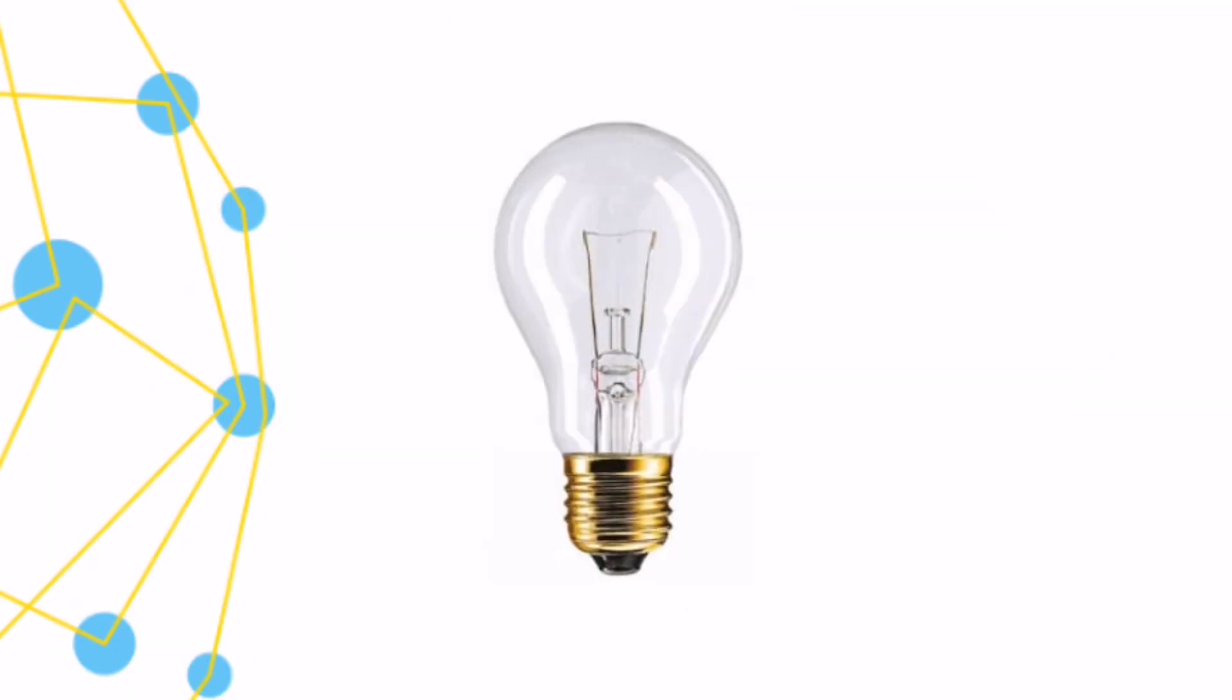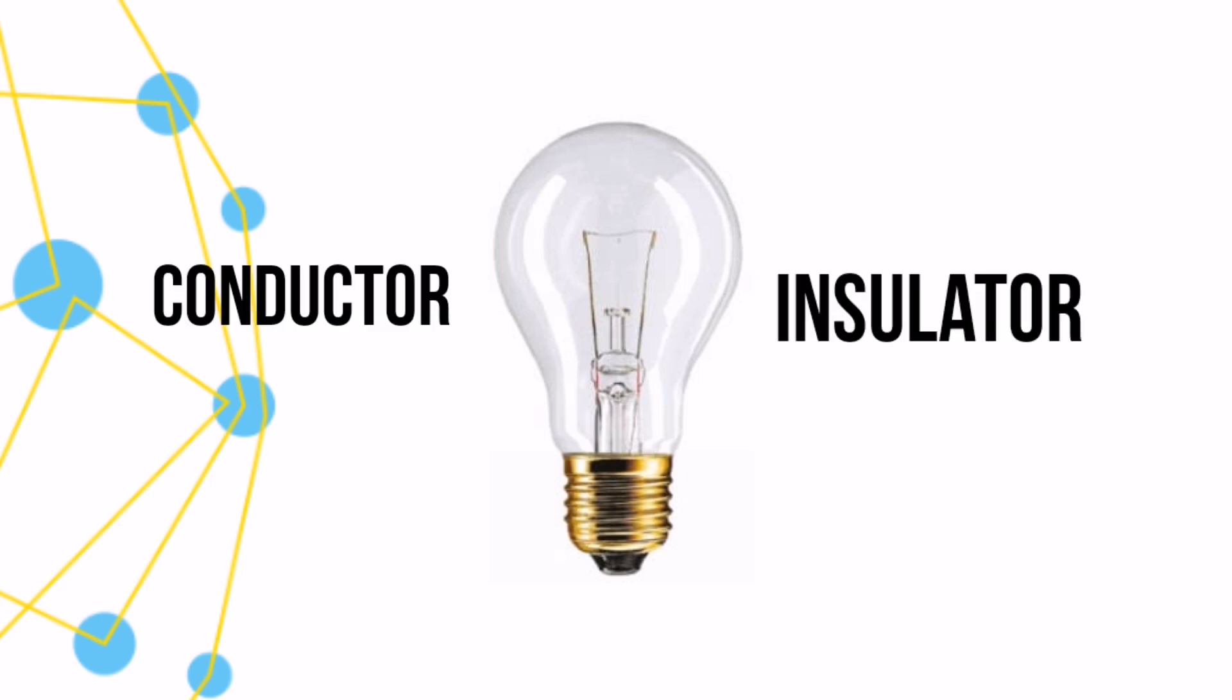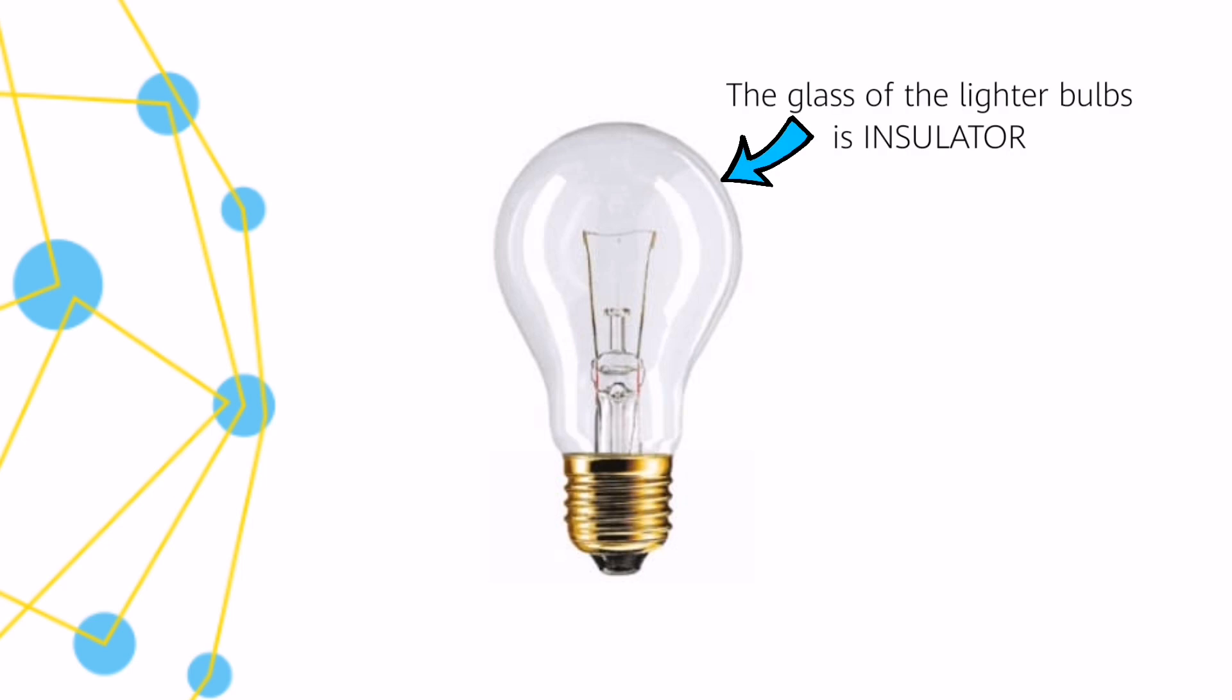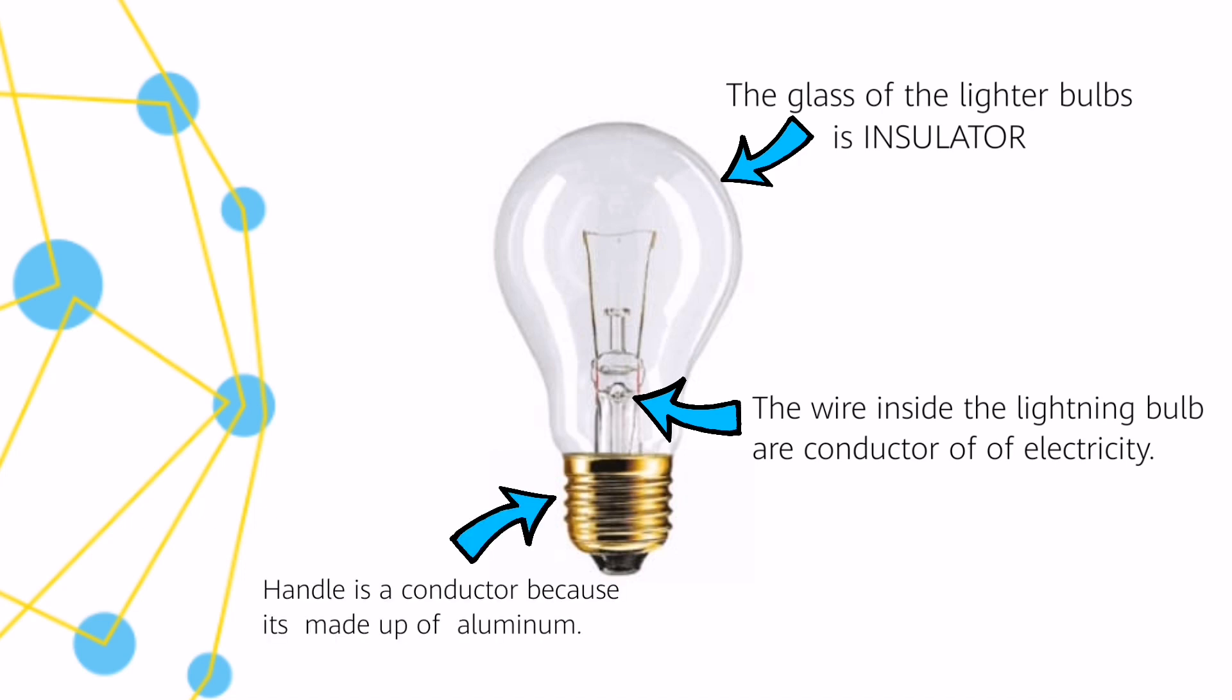This light bulb is a very good example of conductor and insulator. The glass of the light bulb is insulator. The wire inside the light bulb are conductors of electricity. And the handle is a conductor because it's made up of aluminum.